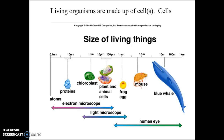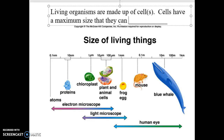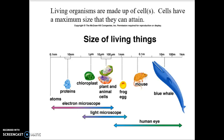Living organisms are made up of cells. Cells will have a maximum size that they can attain — they're only going to get so big. Cells cannot become the size of a volleyball, a beach ball, or even a golf ball. Generally, when we're looking at cells, we're seeing things in this size spectrum: 10 micrometers to 100 micrometers. Those are your general plant and animal cells. A whale is bigger than a mouse not because the individual cell is larger, but simply because the whale has more cells — not bigger cells.